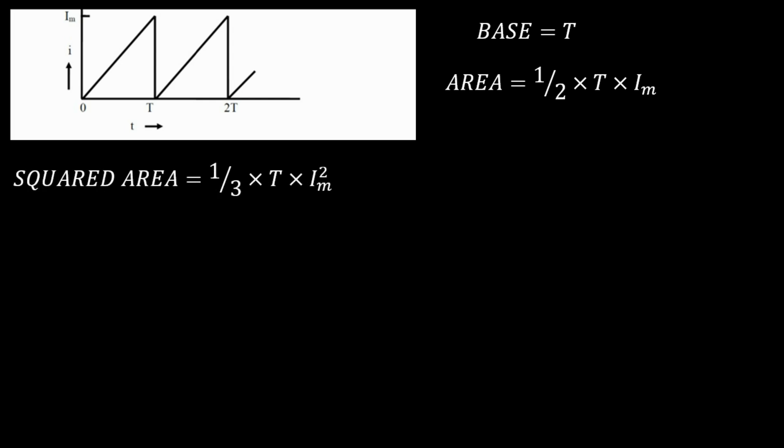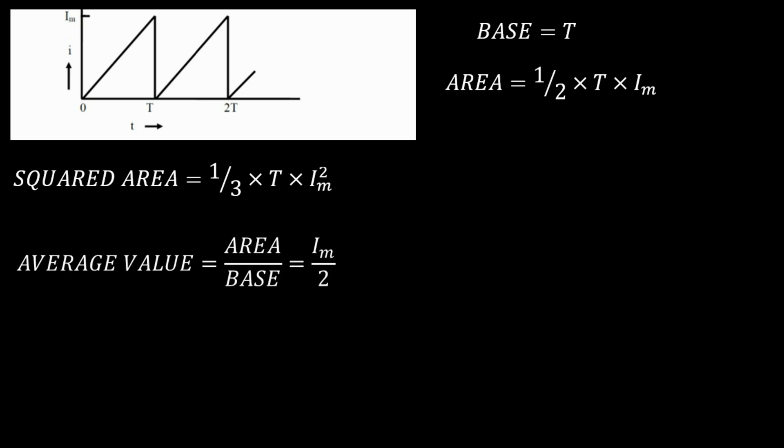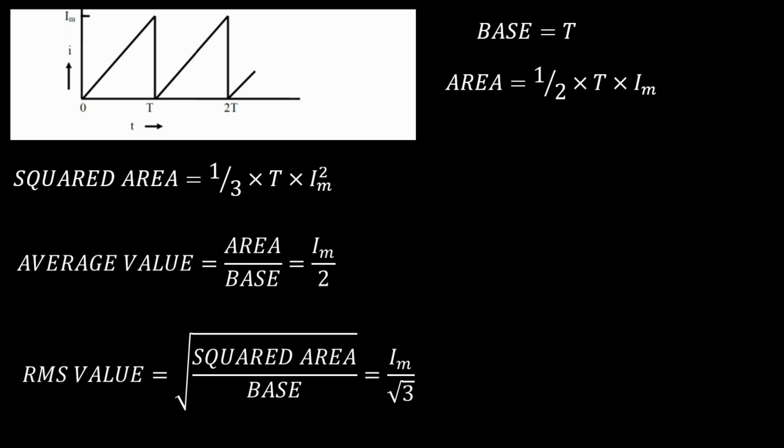Area of the triangle is half into T into Im. The squared area of this triangle is one-third into T into Im squared. Average value equals area divided by base: one-half times T times Im, divided by T, which gives Im divided by 2. RMS value equals the square root of squared area divided by base: one-third times T times Im squared, divided by T, giving the square root of Im squared over 3, which is Im divided by root 3.